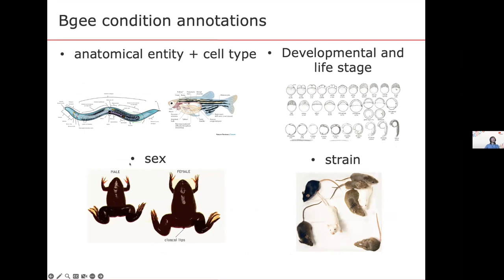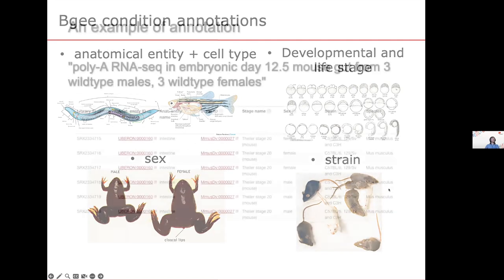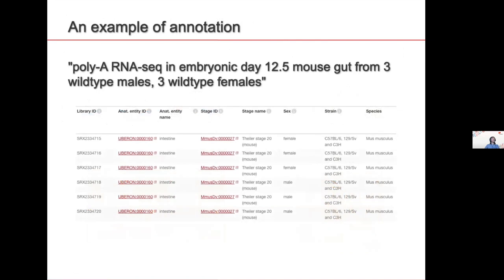One expression record in BG is a gene and a species with all this information: anatomy, cell type, life stage, sex, and strain. For example, from paper metadata: polyA RNA-seq, embryonic day 12.5 mouse gut from three wild-type males and three wild-type females. We structure this with a specific UBERON term, a mouse developmental stage identifier corresponding to day 12.5, and the strain specified from the paper.